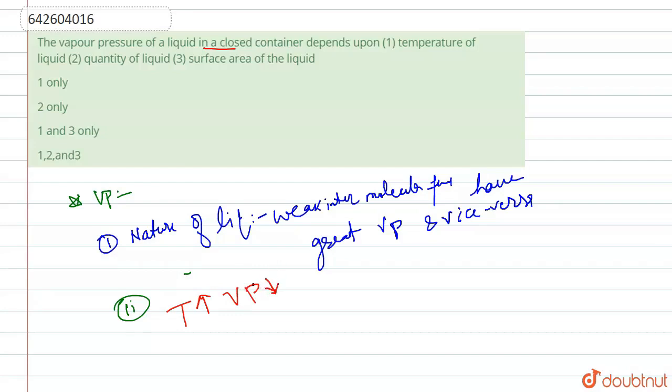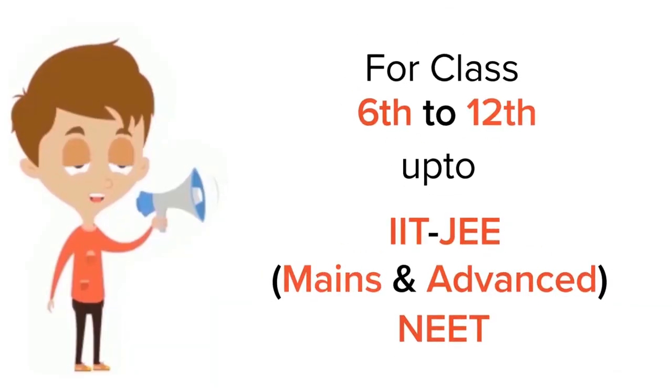So from this, what we can conclude is, our vapor pressure of liquid in closed container depends upon first temperature and there is no other option which satisfies this. So only option A is correct and our answer goes to option A. Thank you.